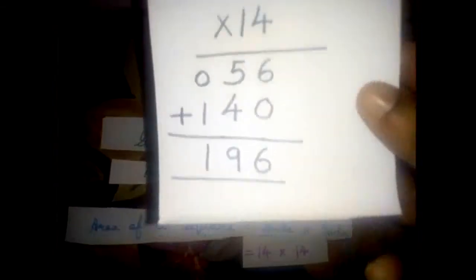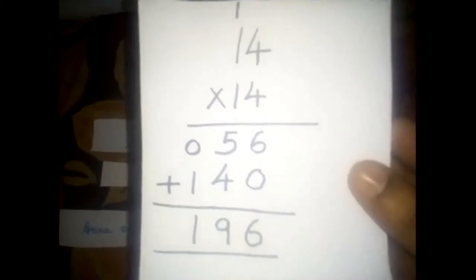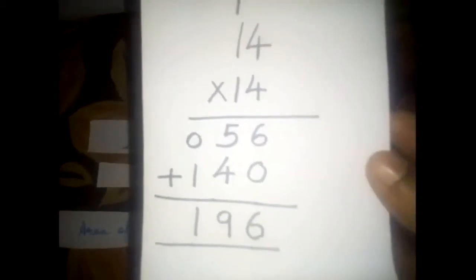The square of 14, answer is how much? 196. When you multiply 14 into 14, you get the answer 196.